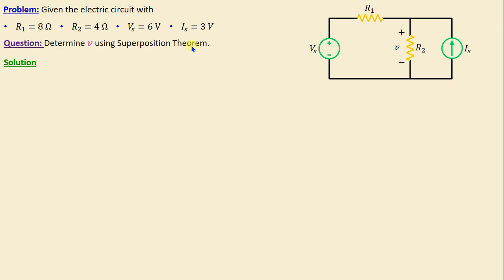First, we begin by identifying each independent source in this circuit. This step provides a clear understanding of the sources that will be analyzed individually. In this circuit we can observe two independent sources: one independent voltage source VS and one independent current source IS.